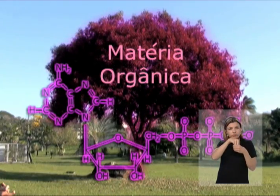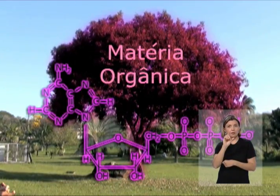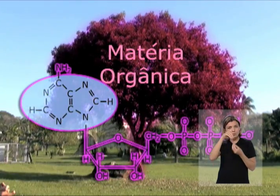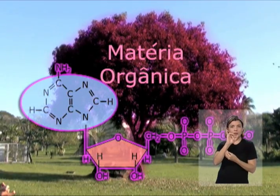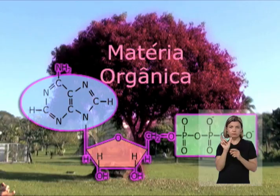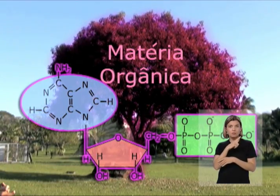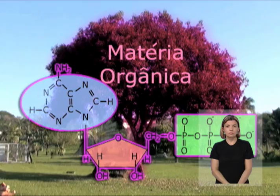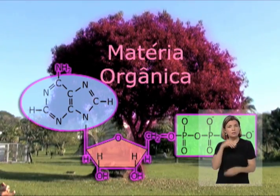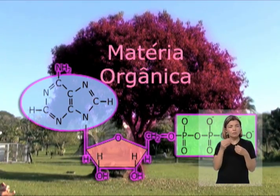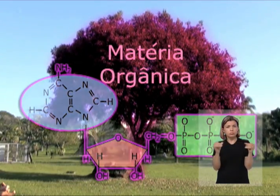O ATP é um nucleotídeo, composto pela base nitrogenada adenina, ligada a um açúcar, a ribose, e a três moléculas de fosfato. Por isso, o ATP é chamado de adenosina trifosfato. O ATP é uma molécula de armazenamento de energia, presente em todos os seres vivos.